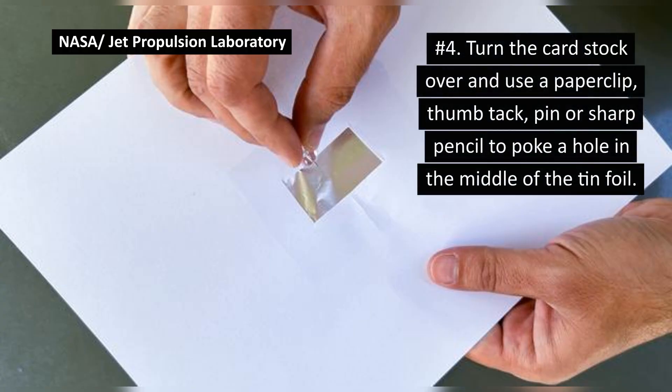Number four, turn the cardstock over and use a paperclip, thumbtack, pen, or sharp pencil to poke a hole in the middle of the tinfoil.